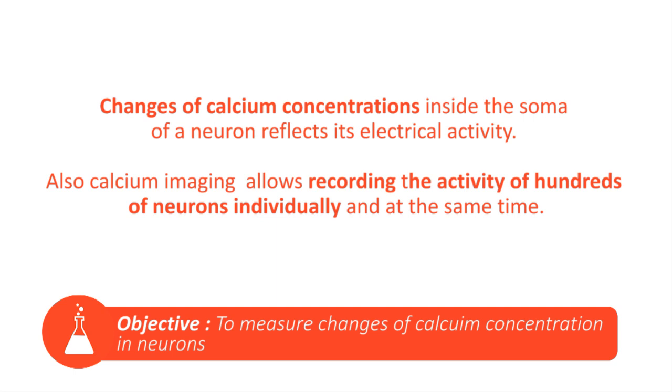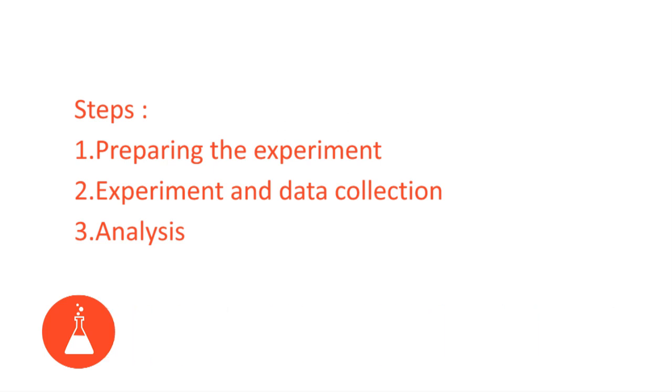Why? Because changes of calcium concentration inside the soma of a neuron reflect its electrical activity. Also, calcium imaging allows recording the activity of hundreds of individual neurons at the same time.